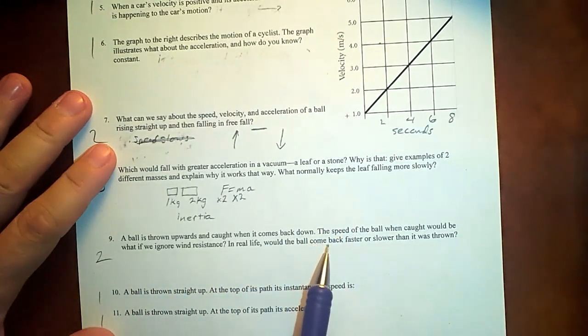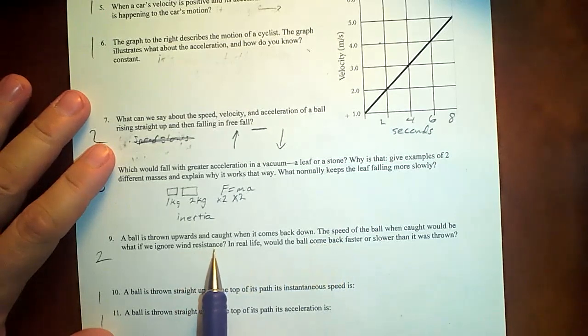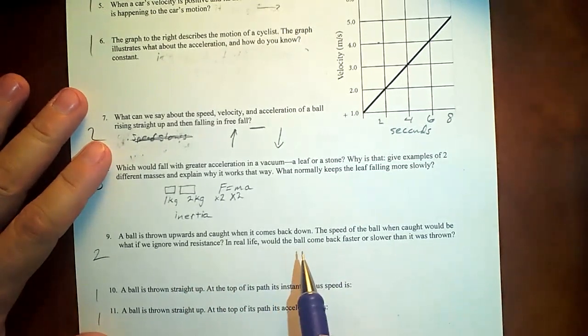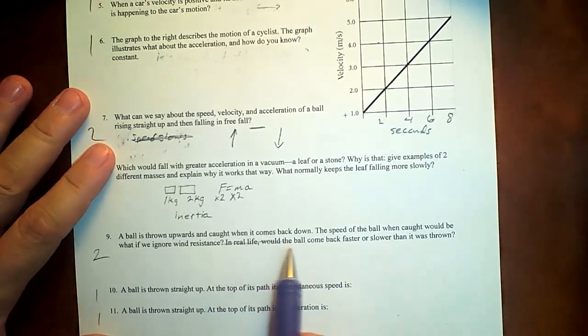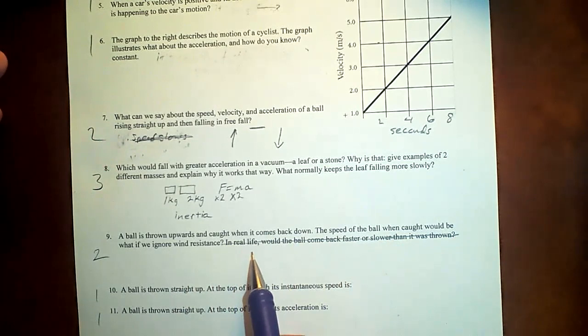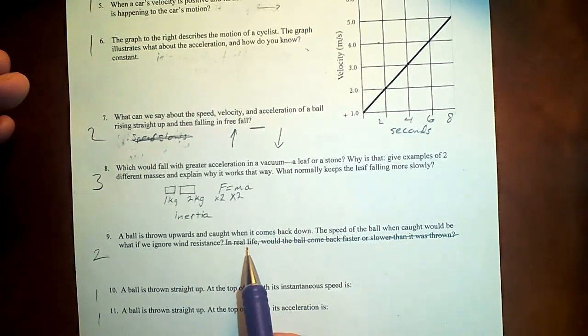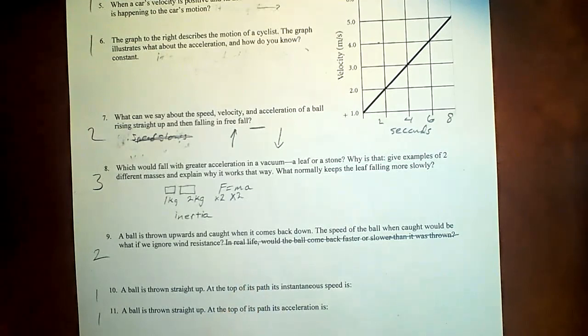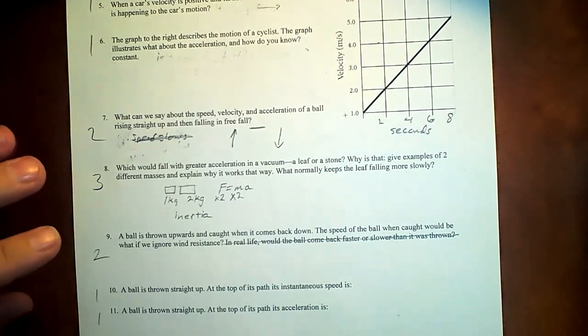Ball is thrown upward and caught when it comes back down. The speed of the ball when caught would be, what if we ignore wind resistance? It would be the same. In real life, would the ball come back down faster or slower? You know what? I got really loose with grading this one because I had a thought. It really depends on how you throw it. So this is kind of unfair, so I'm kind of striking this one, but I'm going to explain it anyway. If you throw it normal person, then it comes back about the same. But probably a little slower because it's not being able to punch through the wind as much, I think, on the way down.